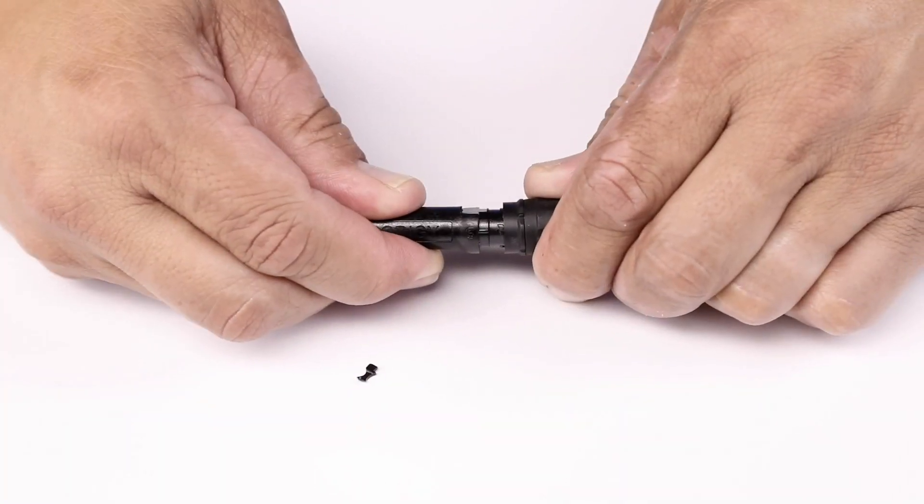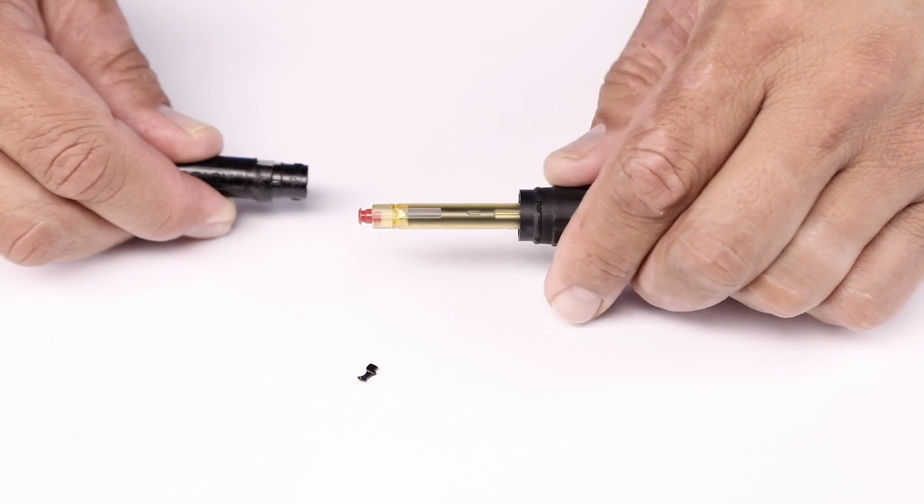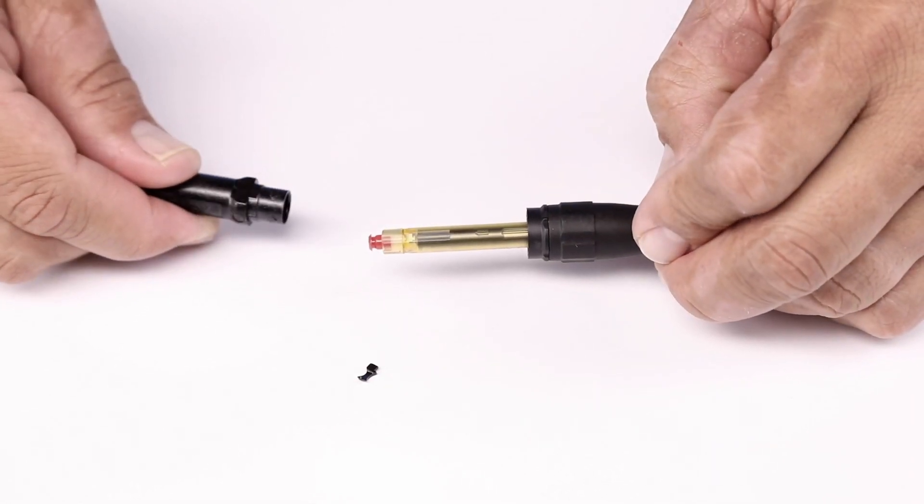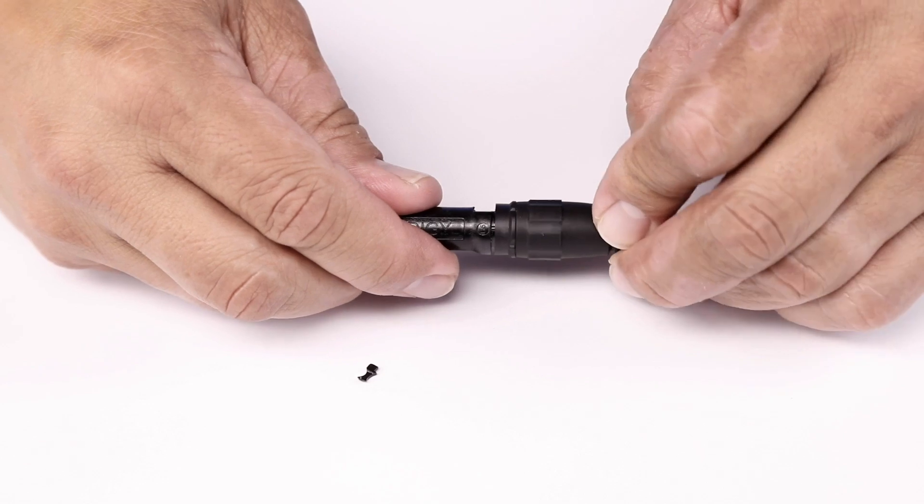Now pull the dust cap from the Prodigy connector. Please note the dust cap may be reused but will no longer have this factory seal feature.